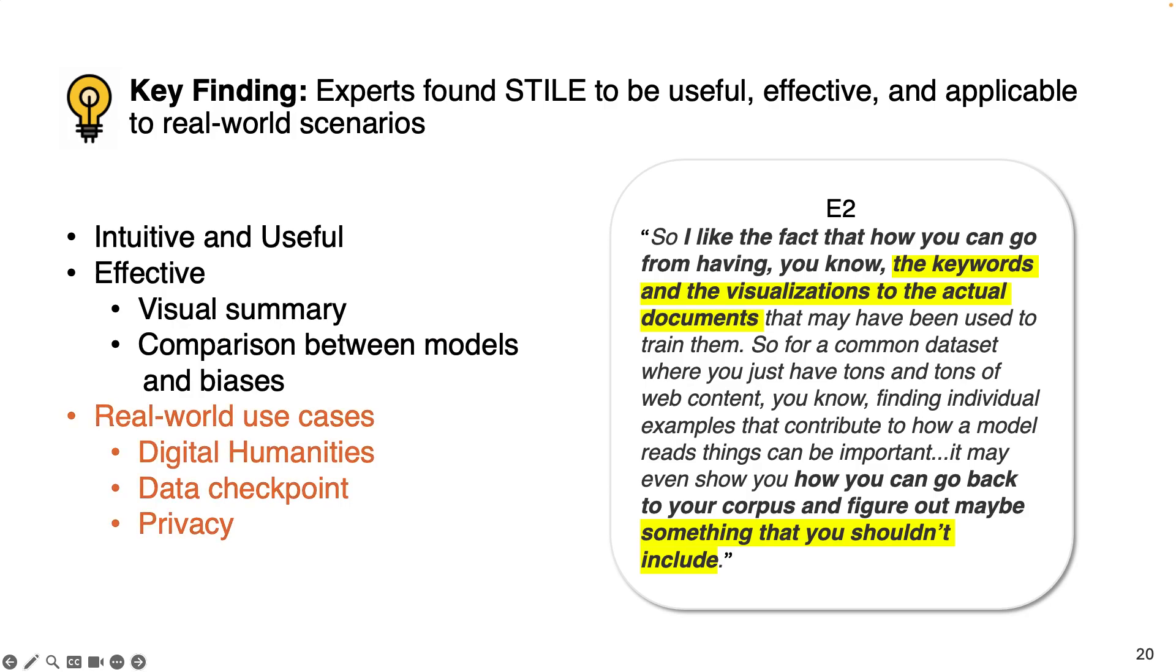When we asked the experts about what other downstream applications they can think of where Style will be useful, we received multiple feedback including digital humanities such as in theater where writers can use this tool to compare scripts of different genres. Experts also believe this tool can be useful as a checkpoint in data cleaning process for organizations that handle large training corpora. One expert also mentioned that if a company does not want to include specific data in the machine learning pipeline for data cleaning or data devising process, they can use Style to check for bias without integrating the data into machine learning pipeline and compromising the privacy.